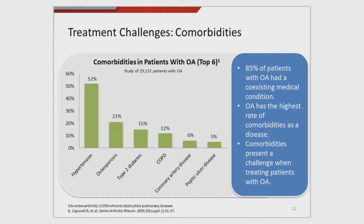85% of patients with osteoarthritis have a coexisting medical condition. Looking at the data, over half of them have hypertension, and many have osteoporosis, diabetes, COPD, and more. This is a polycomorbid problem, and this disease has the highest rate of comorbidities — which makes treatment decisions a real challenge.